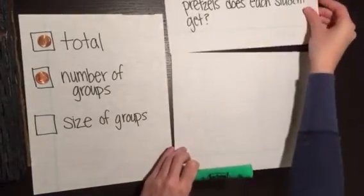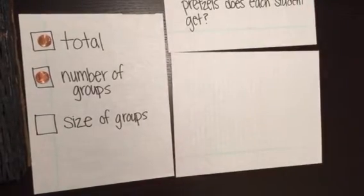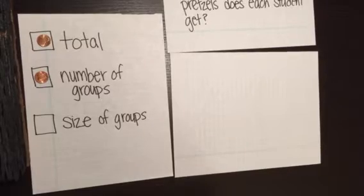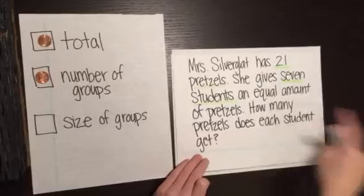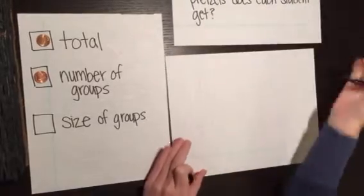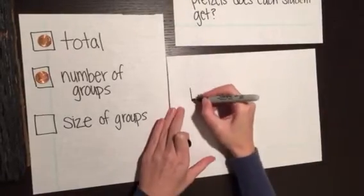If I were to use a tape diagram to solve this problem, since I know the number of groups, the first thing I would do is I would draw that number of boxes on my tape diagram. So there are seven students, so I'm going to draw seven groups, seven boxes.